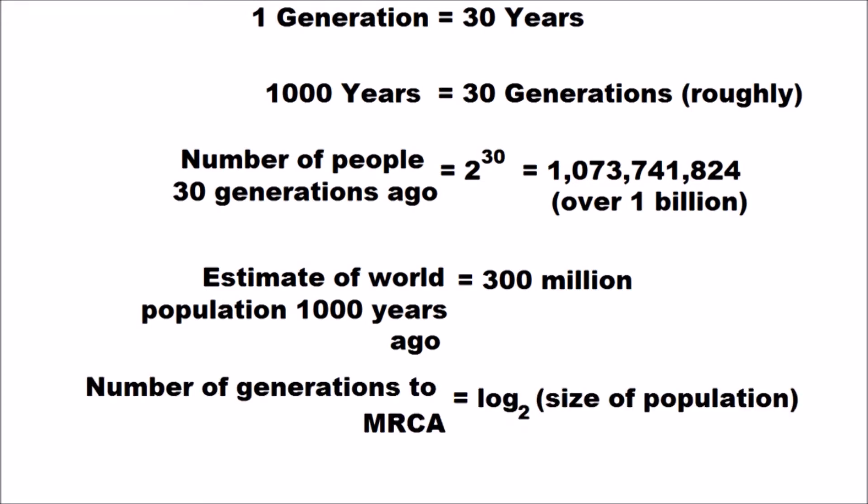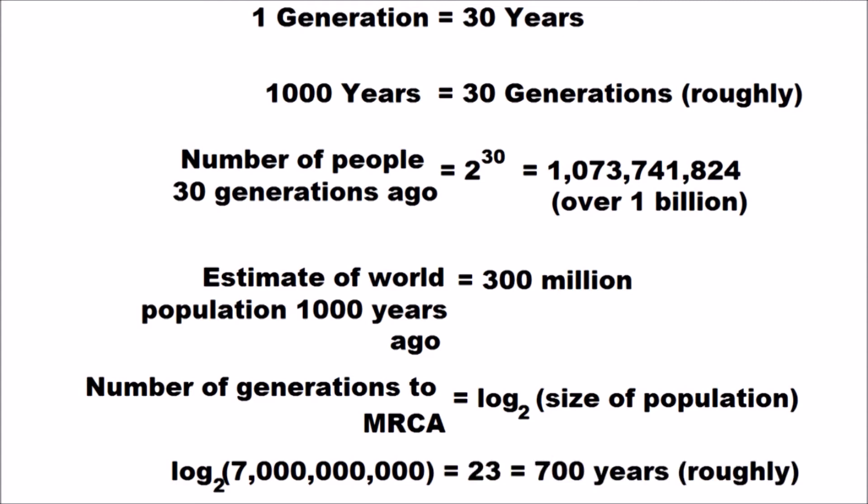In a pure random mating model with two parents per individual and a constant population size, we can find the number of generations to the most recent common ancestor by taking the log base 2 of the population size. The world's current population is seven billion, and by this method the most recent common ancestor of present-day humans lived only 30 generations, or roughly 700 years ago — which is roughly 1300 AD.